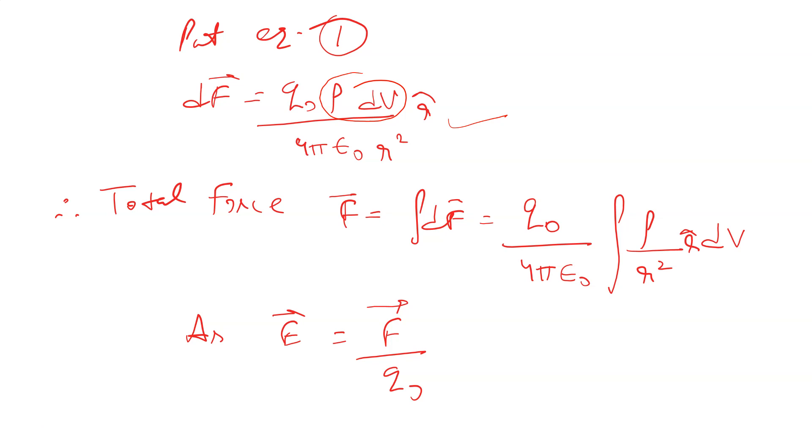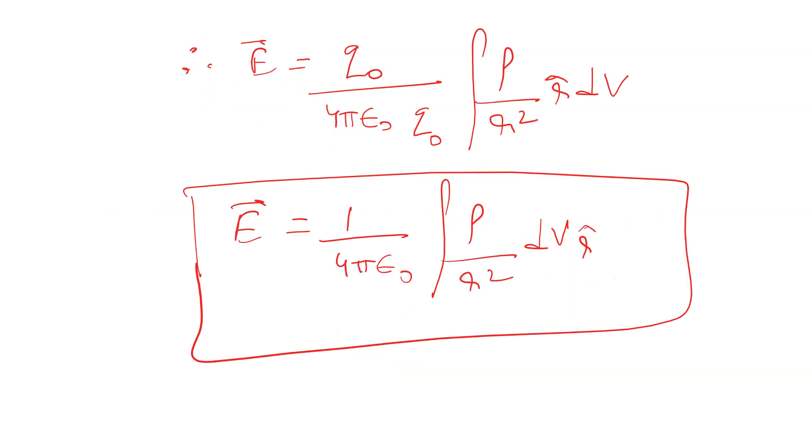Now as electric field intensity is given by E equals F by q₀, put the value of F here. Q₀ cancels out, so this will be the result.